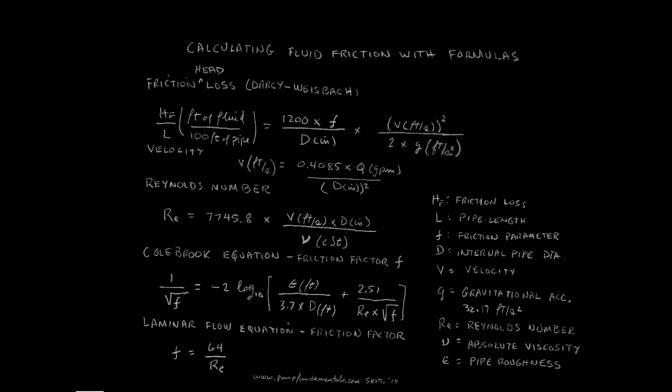If you inject a dye into a flow stream in the laminar regime, the dye particles will remain close together as they go down the stream. If the flow is turbulent, the dye particles immediately disperse throughout the cross-section of the pipe.